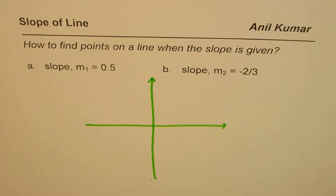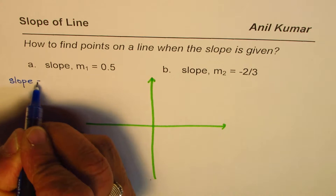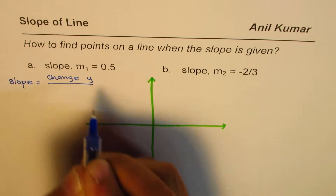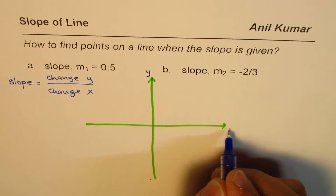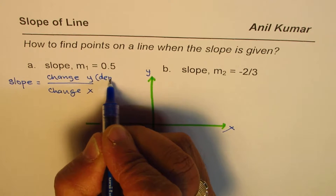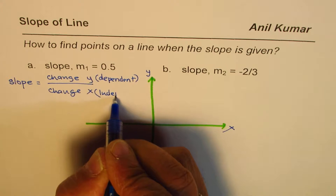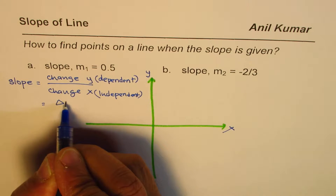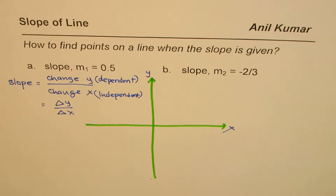First let us understand what slope is. When I say slope, it means change in y value — the dependent variable, plotted on the y-axis — over change in x value, which is the independent variable along the x-axis. This ratio, in short, we can also call delta y over delta x.